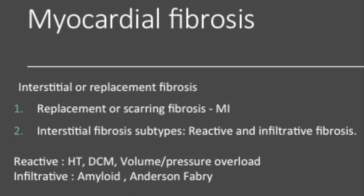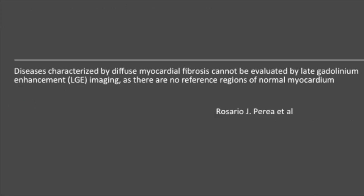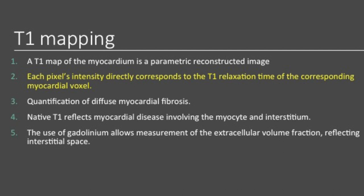Interstitial fibrosis has two subtypes: reactive and infiltrative fibrosis. Reactive fibrosis is seen in patients with hypertension, dilated cardiomyopathy, and volume and pressure overload conditions. Infiltrative fibrosis occurs in patients with amyloidosis and Anderson-Fabry disease. It has been known that diseases characterized by diffuse myocardial fibrosis cannot be evaluated by late gadolinium enhancement imaging, as there are no reference regions of normal myocardium. This is where T1 mapping plays a role.